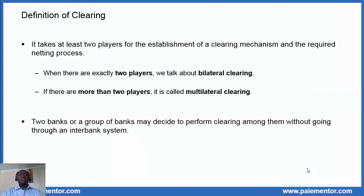It takes at least two players or entities to establish a clearing mechanism and the required netting process. When there are exactly two players we talk about bilateral clearing. If there are more than two players it is called multilateral clearing. Two banks or a group of banks may decide to perform clearing among themselves without going through a clearing system or an interbank system.